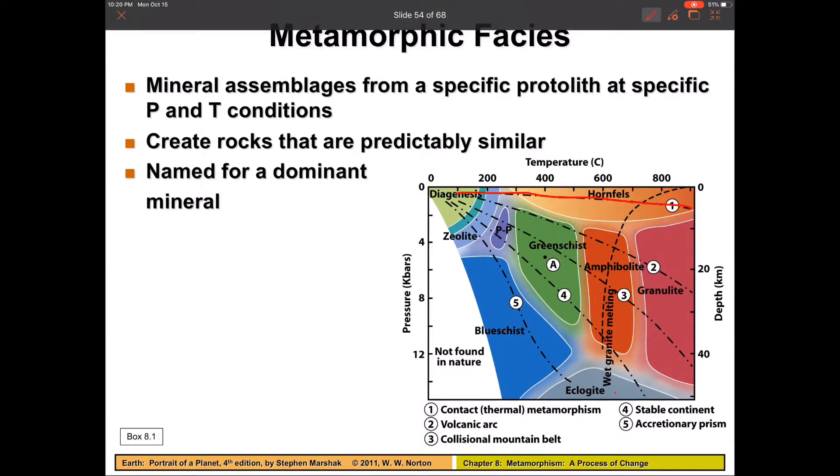Number two is a volcanic arc. So if we follow this line here, you can see it's high temperatures, but slightly higher pressures. That's because we have subduction going on. Of course, you have an igneous intrusion wherever you have volcanoes, but we have subduction going on, which is going to add a little bit of pressure in there. If we look at number three, this is your collisional mountain belt. So continent-continent collision. You see it's that middle of the road where we're going to go from slate to phyllite to schist to gneiss. Number four is stable continent. This is just burial over time. The older the rocks are, the more they're going to get buried and experience the effects of temperature and pressure.